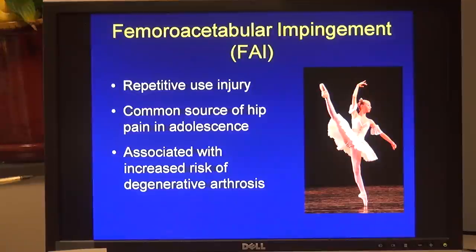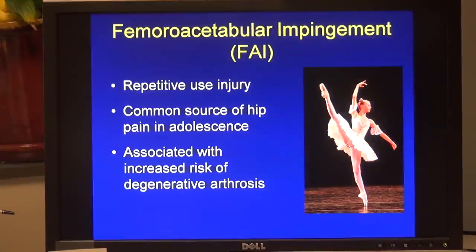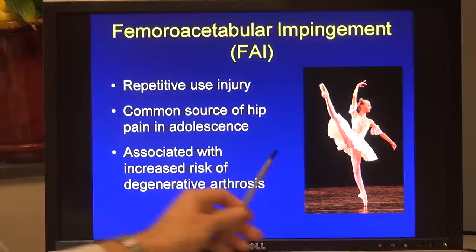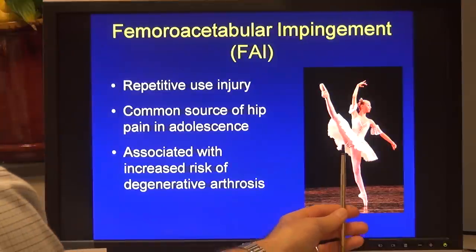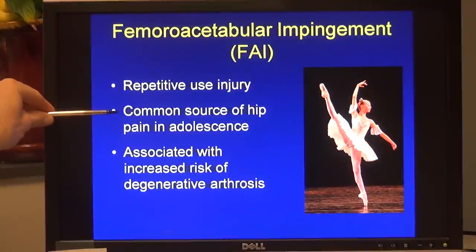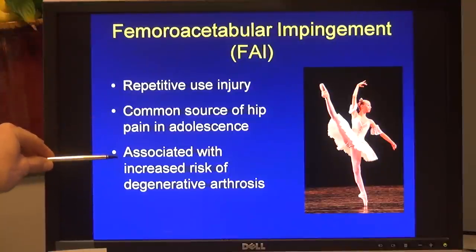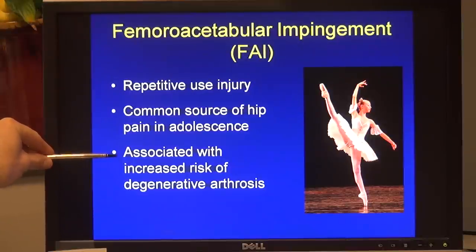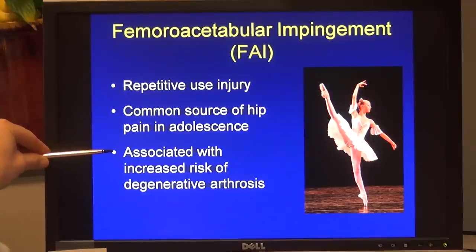Femoroacetabular impingement, or FAI, is a repetitive use injury of the hip. It is typically associated with hyperflexion of the hip and is a common source of hip pain in the adolescent, particularly the adolescent female. FAI is also associated with an increased risk of degenerative arthrosis later on in life, and as such has significant economic implications for our society.